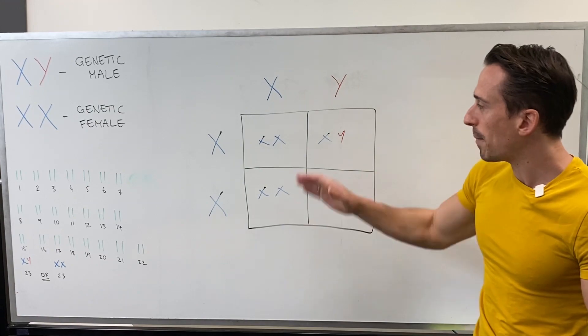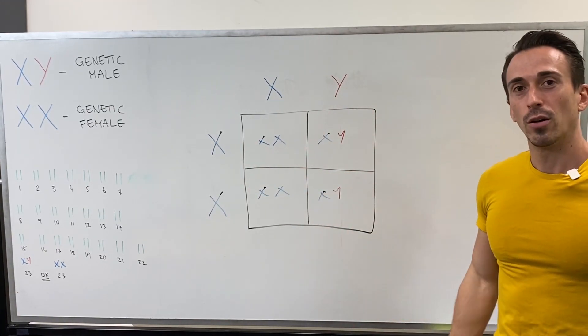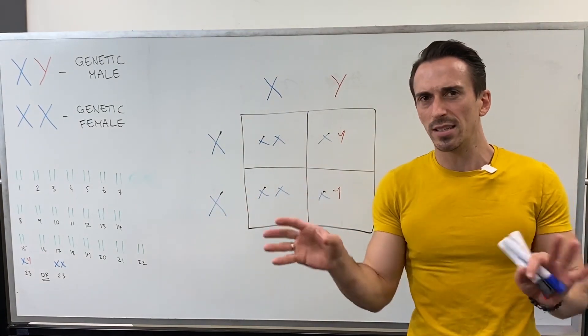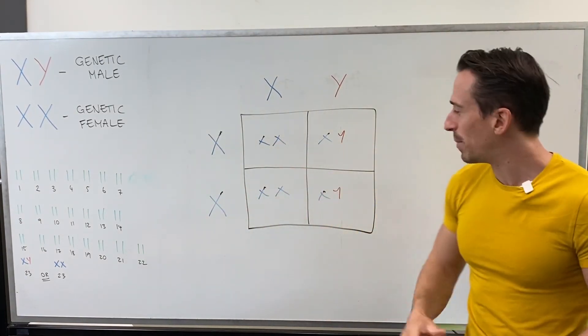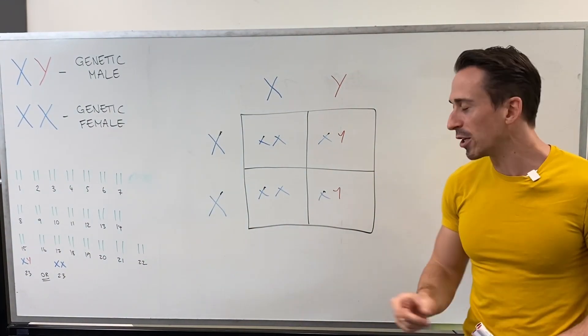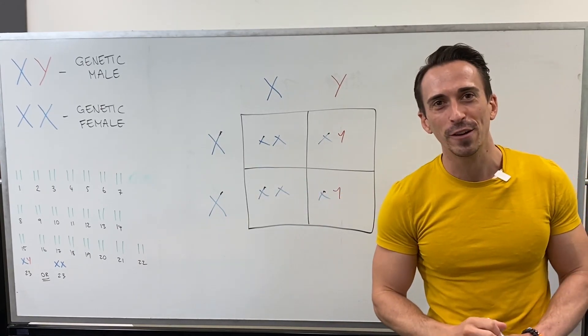What it means is if mum has haemophilia, both or any females, statistically, the females will not have haemophilia, they'll be carriers for it, but every single male will have haemophilia. 100% chance that the males will have haemophilia if the mother has haemophilia.